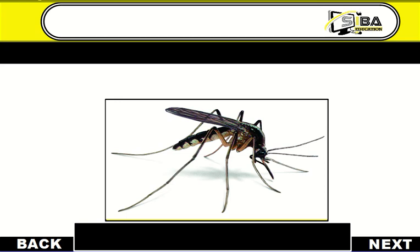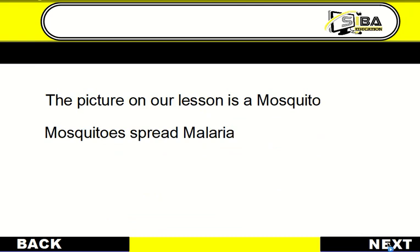Let's continue with today's lesson. Let's predict this object we see. Is it an animal or an insect? Watch it carefully. What do you see? I think the picture on our lesson is a mosquito. We've all heard about mosquitoes before. What do they do? Is a mosquito an animal or an insect?